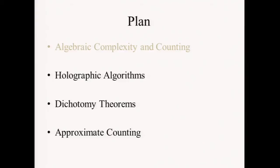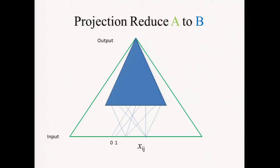So I've done the first segment, emphasizing that counting and algebraic complexity are very much related. Now I want to get to my second part: holographic algorithms. What I said was that many important problems can reduce to each other just by substitution. The question is: is this the simplest relationship between two problems you can have, or is there something even simpler that helps?